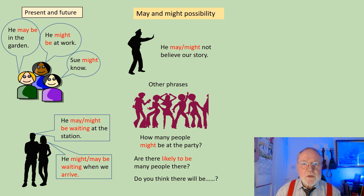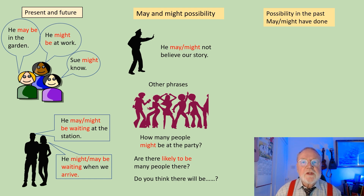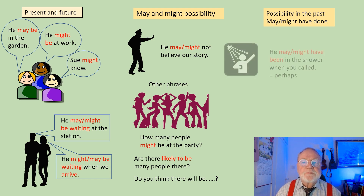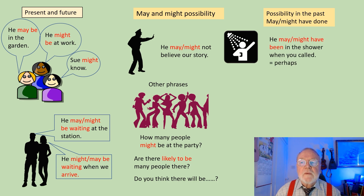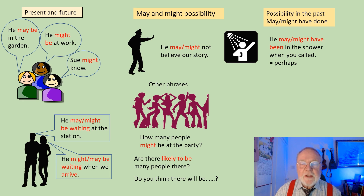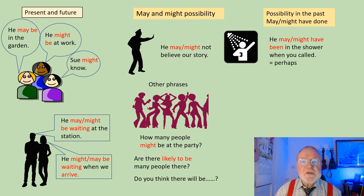When we talk about possibility in the past, we use the auxiliary verb have. He may or might have been in the shower when you called. This has the idea of 'perhaps' — perhaps he was in the shower.